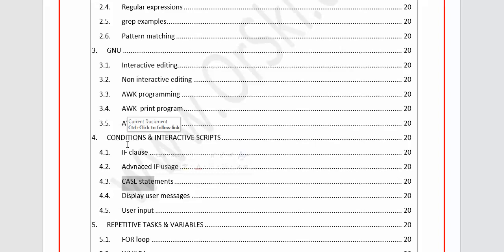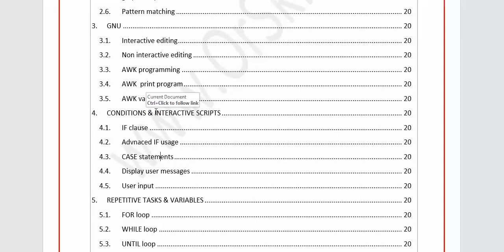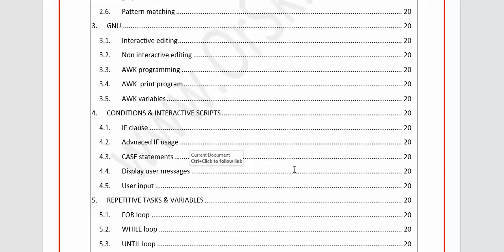Conditions are always very important, especially for non-interactive scripting that has to be automated based on results. For example, if a command throws an output of 'one' you do this, if it throws 'two' you do something else, if it throws 'three' you do something else — that's handled with if clauses. We are also learning interactive scripting — how to display error messages to the user, telling them your script is successful, this is the output, so the user sees the result of the script.